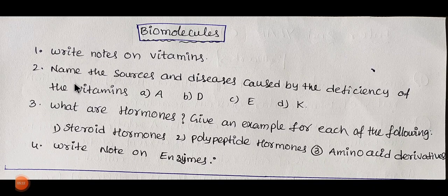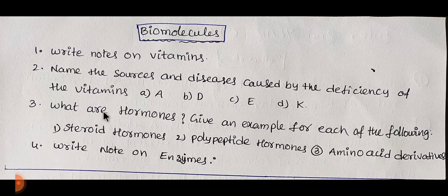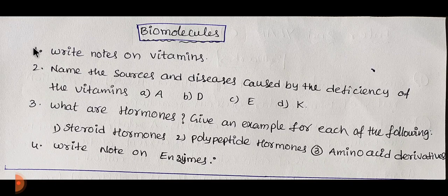Next one is biomolecules. We have 4 questions. First: write notes on vitamins. Second: Vitamins C, B, and others — what is the source and what diseases do they cause? Third: write about hormones — give an example for each of the following: steroid hormones, polypeptide hormones, and amino acid derivatives. Fourth: write notes on enzymes. So these 4 are important; practice them to score 4 marks.